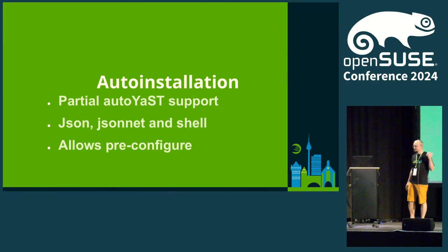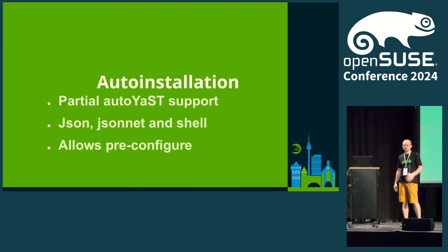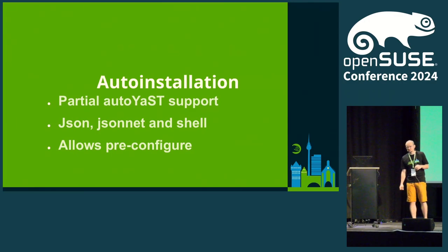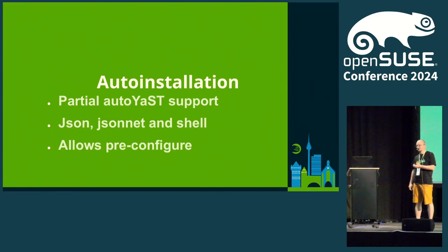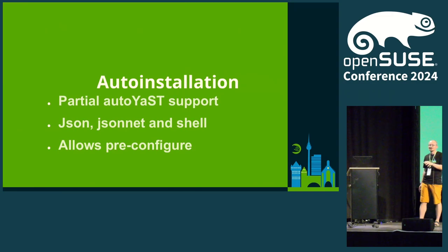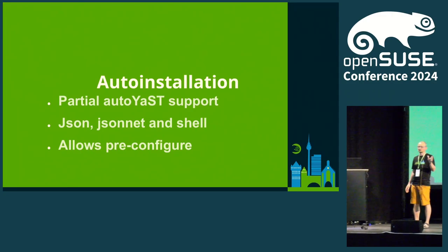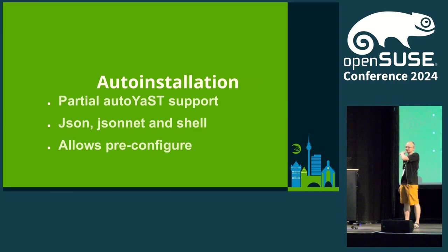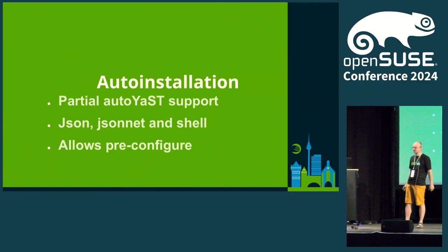The other option, probably the most flexible, is a shell script. Shell scripts just use the command line interface of Agama — you upload a shell script for automatic installation and it does all steps: load a JSON file, do some editing, obtain some information. The plan also includes, before the system is unmounted, doing some stuff on the target system. For example, at SUSE there's a requirement to have Velociraptor installed on each server — you can install it, deploy configuration, enable the systemd service, and then reboot, having everything ready at the first boot.